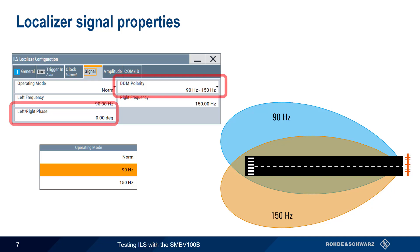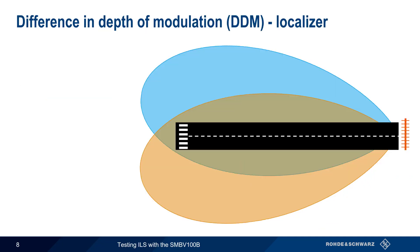The final parameter is DDM polarity. To understand what this means, we first need to explain what DDM, or difference in depth of modulation, is. Both lobes of the localizer are AM modulated – the left lobe at 90 hertz and the right lobe at 150 hertz. The modulation depth of each lobe is different depending on our position within the lobe. On the runway centerline, both lobes have the same AM modulation depth of 20%.